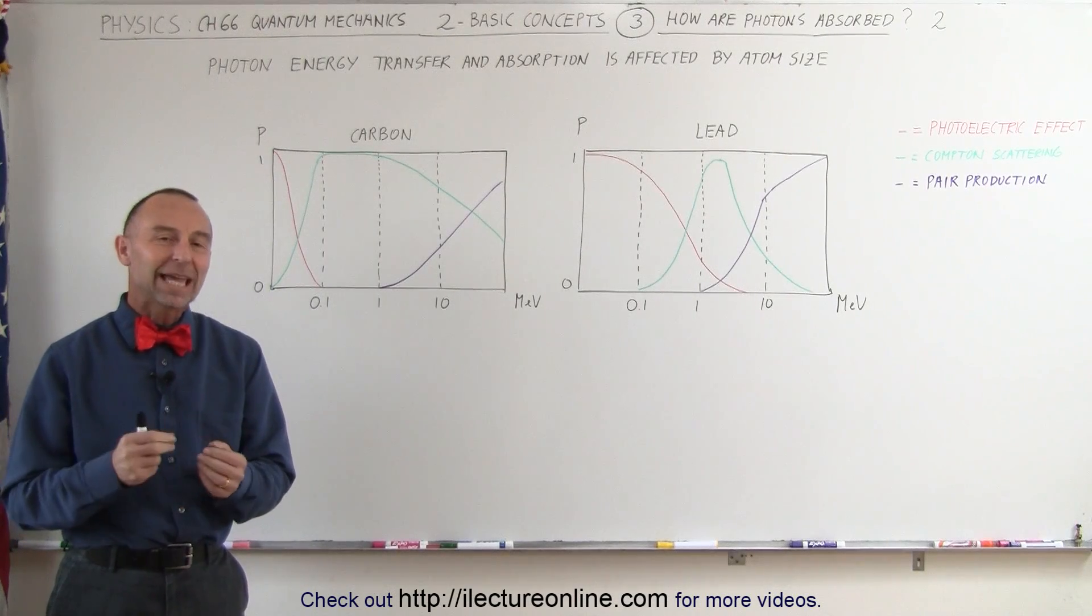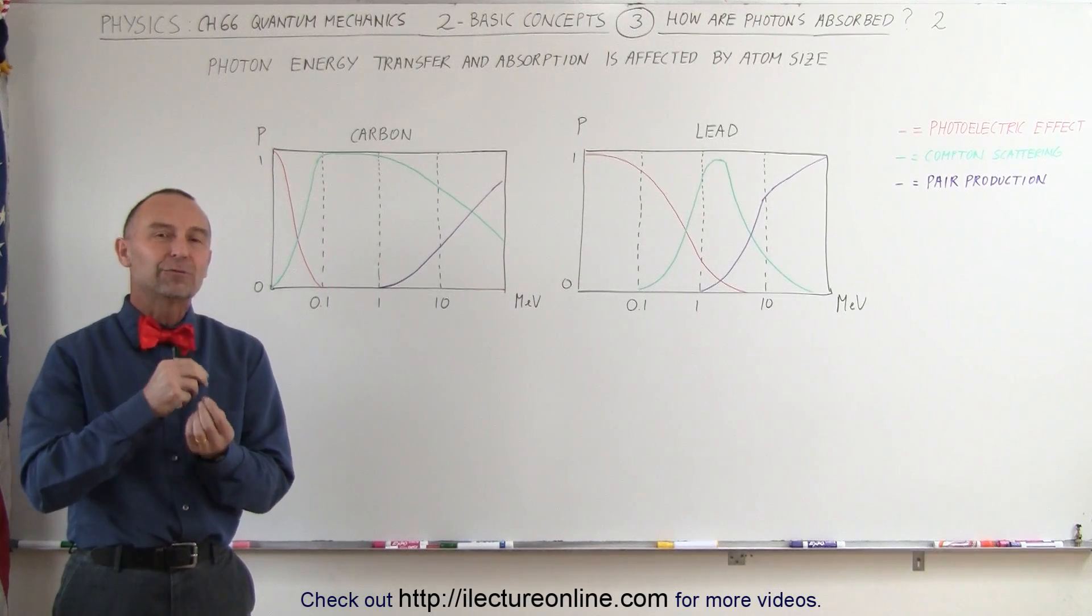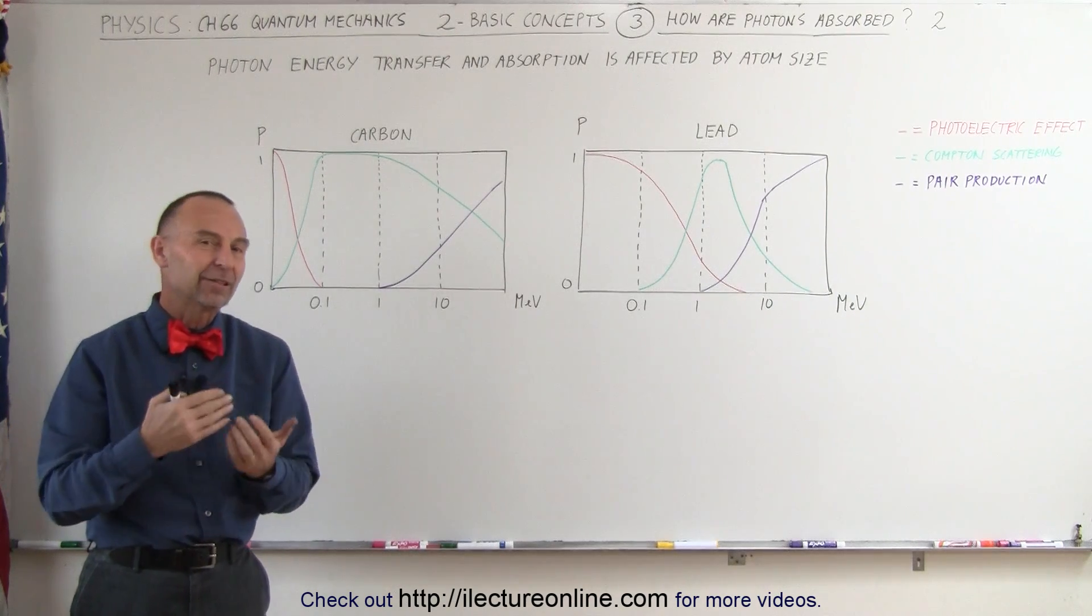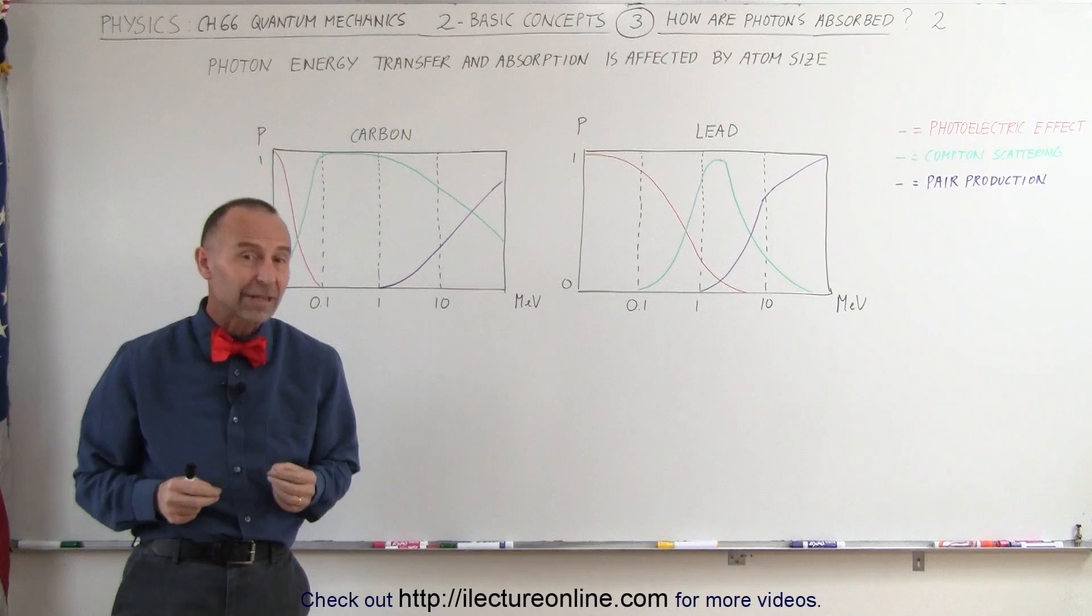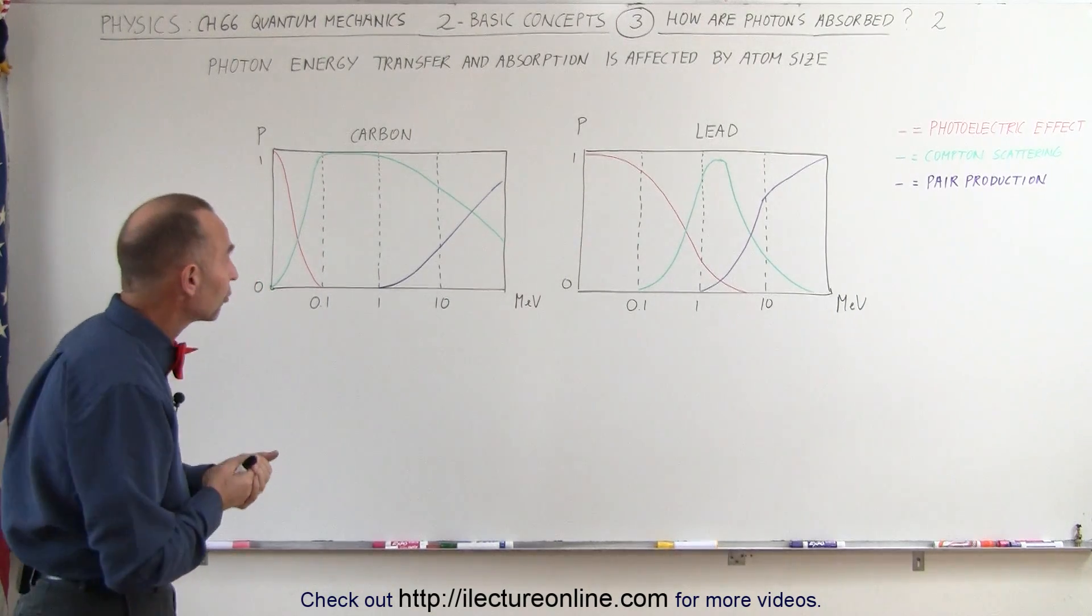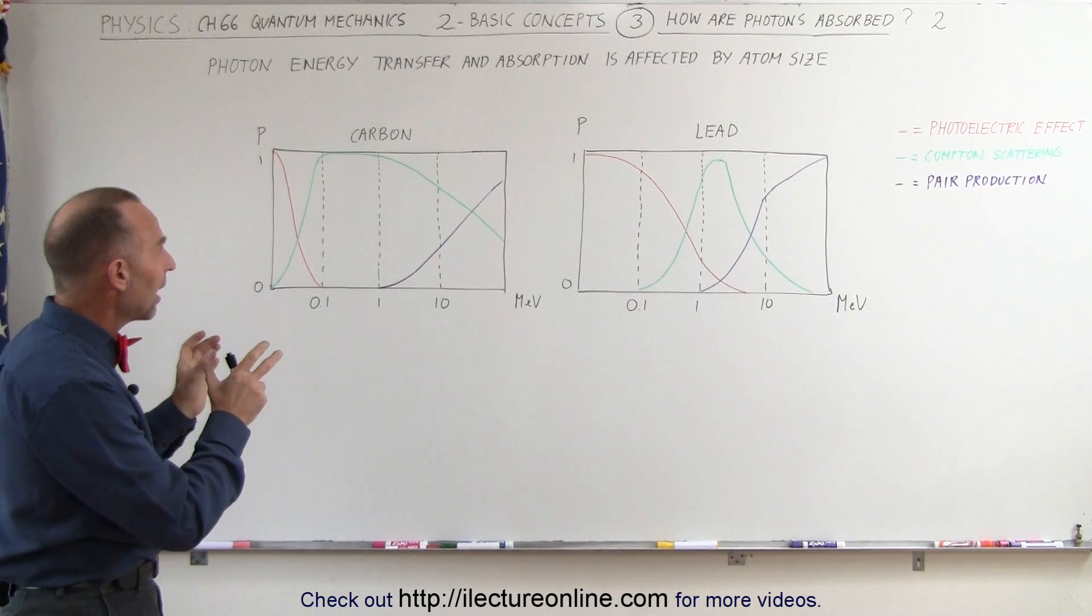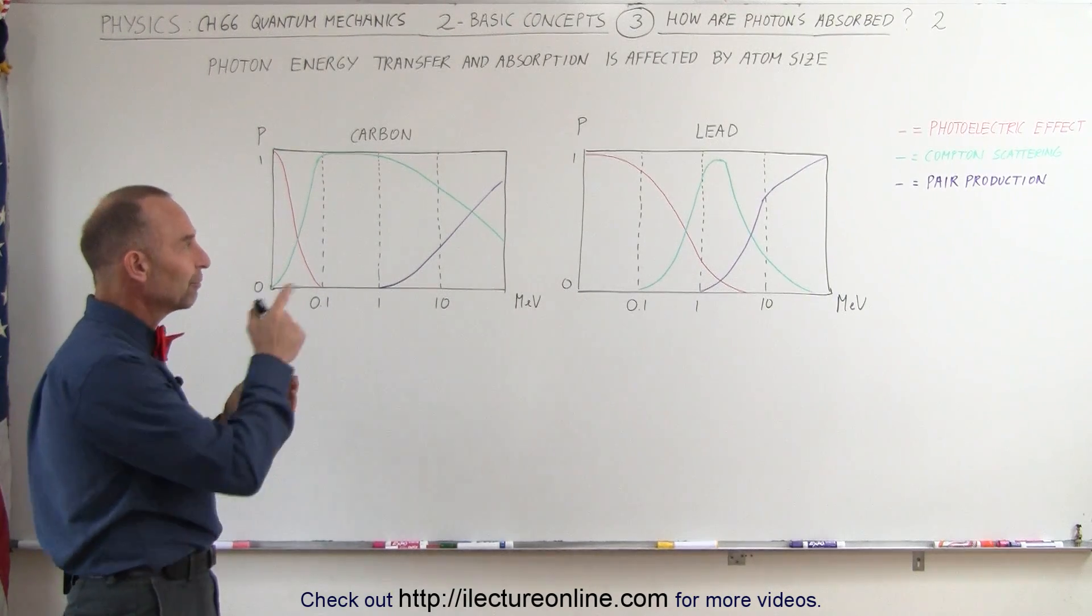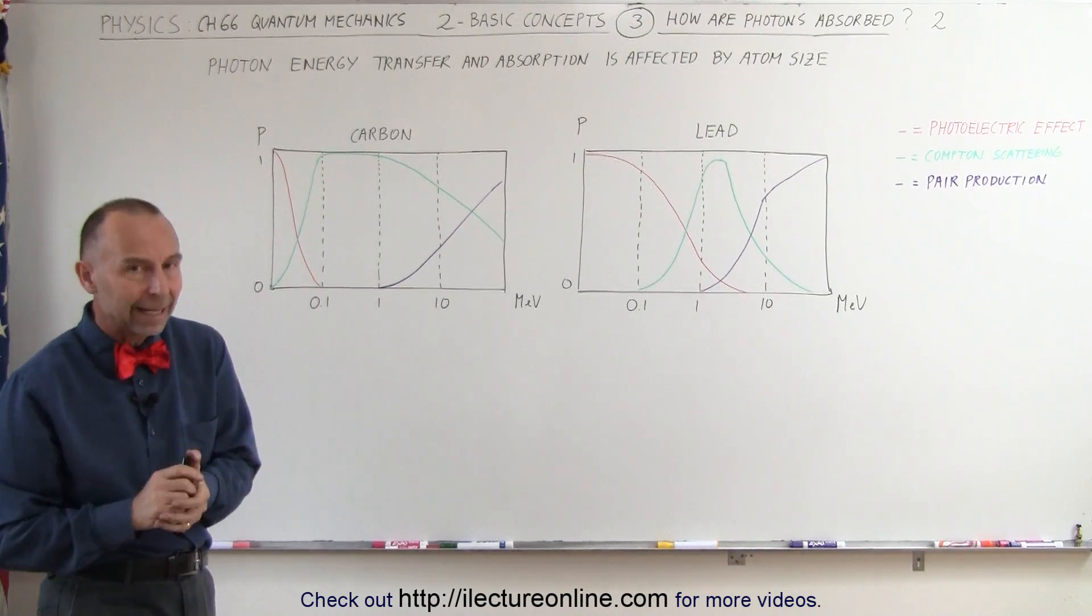Welcome to ElectronLine. To gain better understanding of how photons transfer their energy, either in part or all of it, via the various mechanisms to the electrons of the atoms, or through to pair production, let's take a look and see how that compares when photons interact with carbon atoms versus when photons interact with lead atoms.